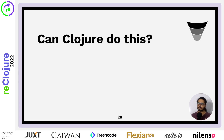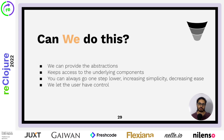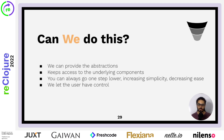So, can Clojure do this? Obviously not — it's a language, it can't really do anything. But can we do this as a community? And I think we can. We can provide the abstractions, and those abstractions keep access to the underlying components. The beginner and the user can always go one step lower. They can increase the simplicity by having more components to deal with and decrease the ease of the abstraction. We can give the user, the learner, the beginner, that control. They can dictate their Clojure experience.